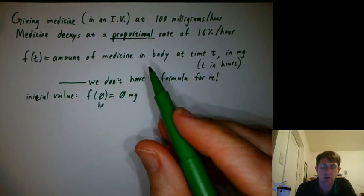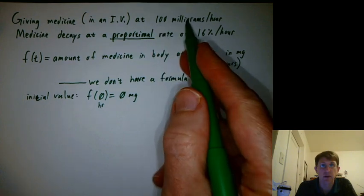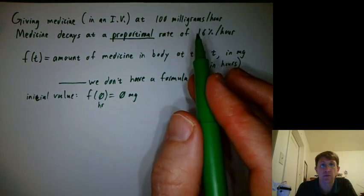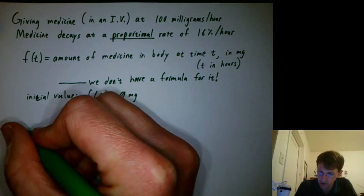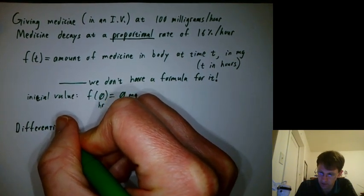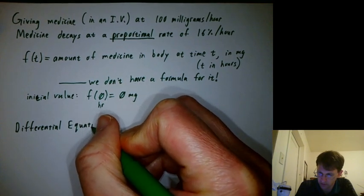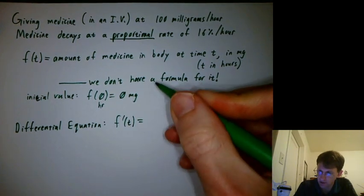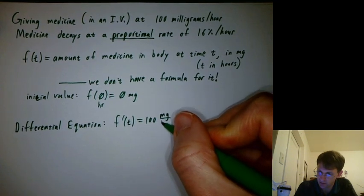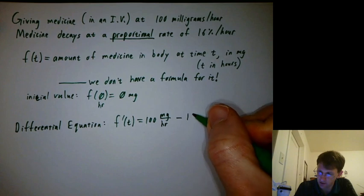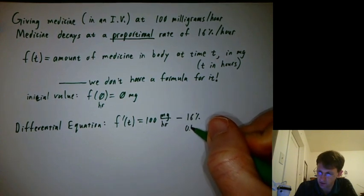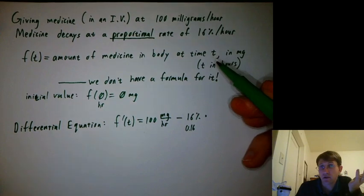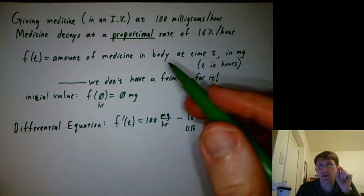What can we say about how f(t) changes? We know the rate we're adding, and that's a rate, so that's like f prime. And we also know that we lose some in a sense that's proportional to how much is in the body. So our differential equation is f'(t) = 100 - 0.16 times whatever is in the body. We don't have a formula for it, but we have a name for it, and the name for it is f(t).